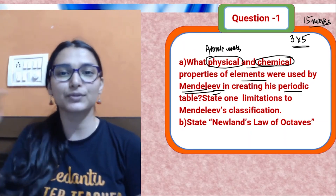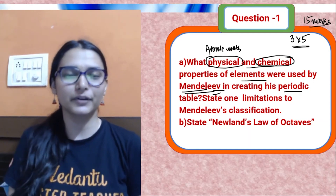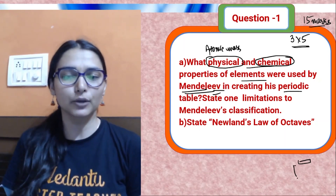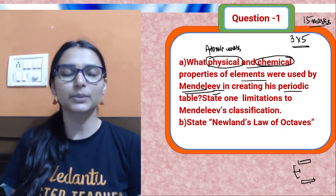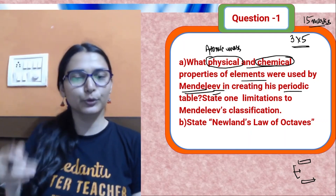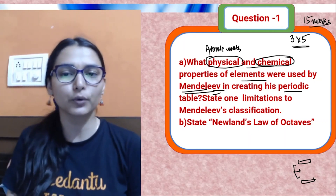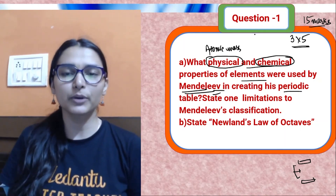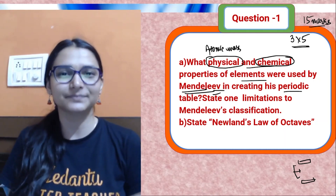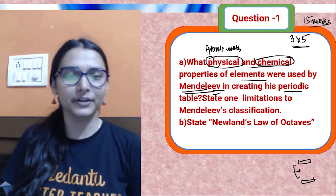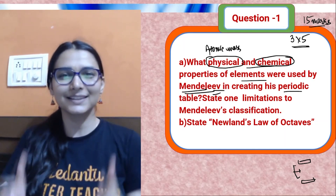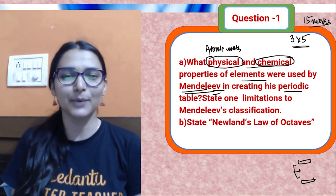When writing subjective answers, give a slight introduction, then the main answer, then conclude — three steps for the best structured answer. Highlight important points in pointer form if there's a lot of theory. The chemical property Mendeleev used was the formula of oxides and hydrides of elements. He arranged elements so those with the same formula of oxides and hydrides fell in the same group.